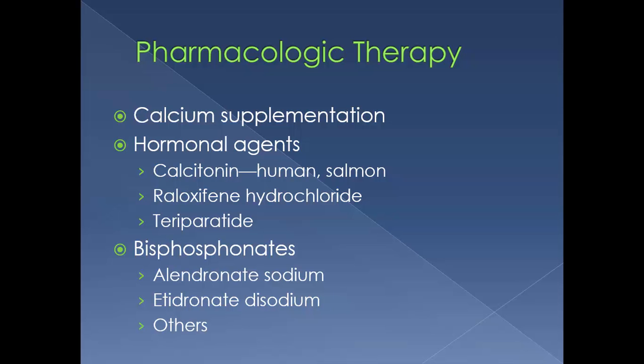Bisphosphonates are the most commonly prescribed drug class for treating osteoporosis. These include alendronate sodium, which is Fosamax, and etidronate disodium, which is Didronel — both are injectables. Others include Boniva and Actonel. Bisphosphonates inhibit bone resorption by suppressing osteoclast activity, thus increasing bone density and decreasing the incidence of fractures. Adverse effects include GI problems such as nausea, vomiting, abdominal pain, and esophageal irritation.